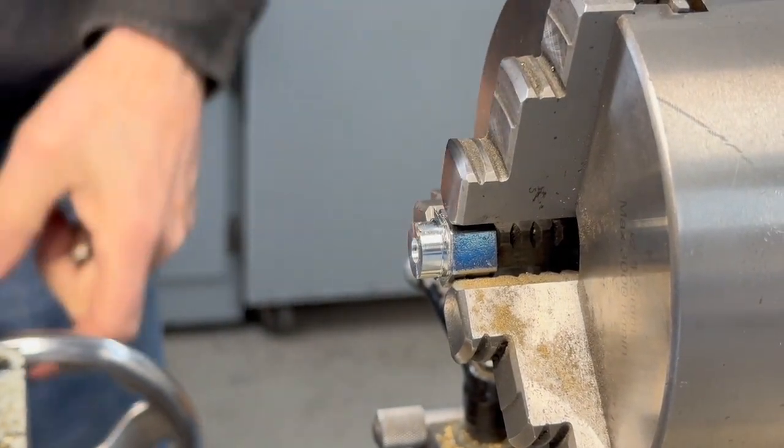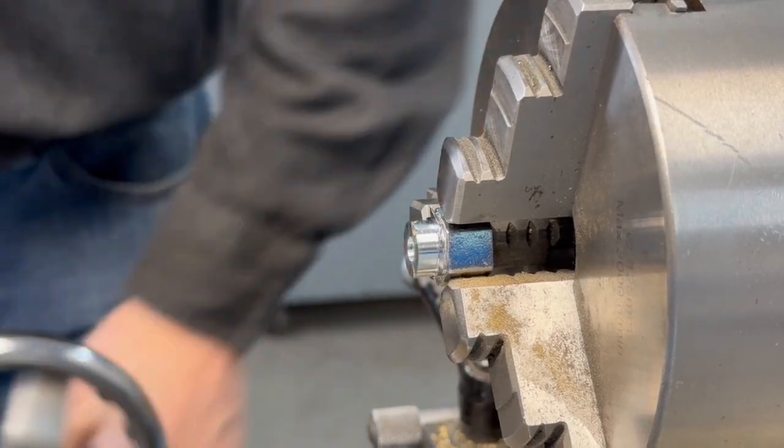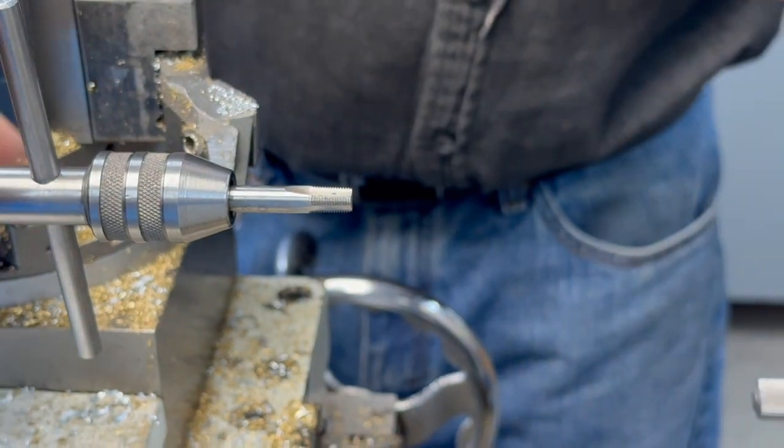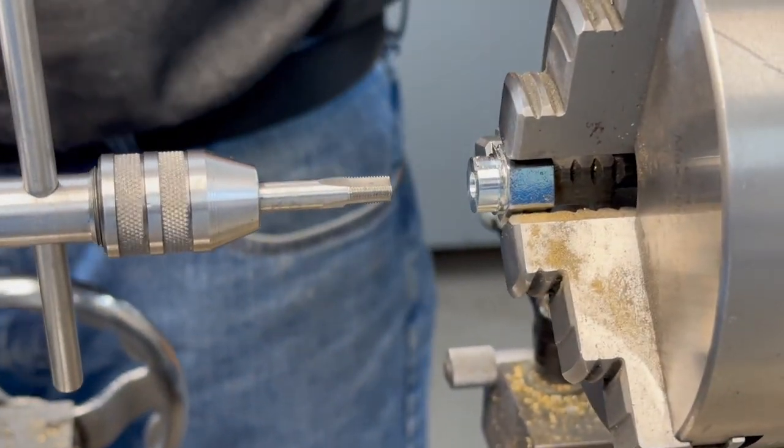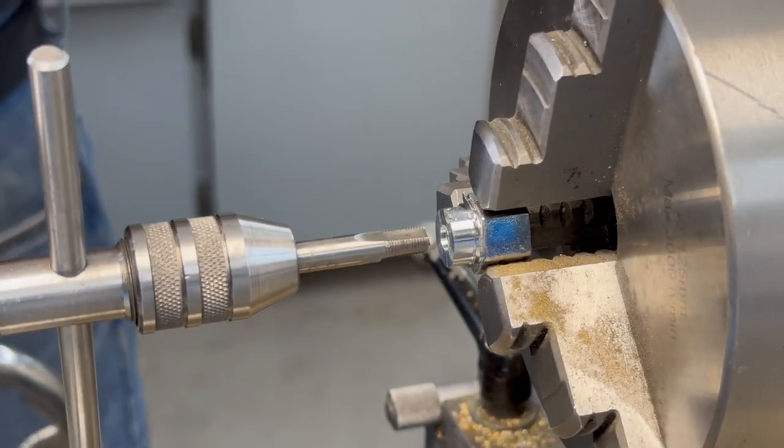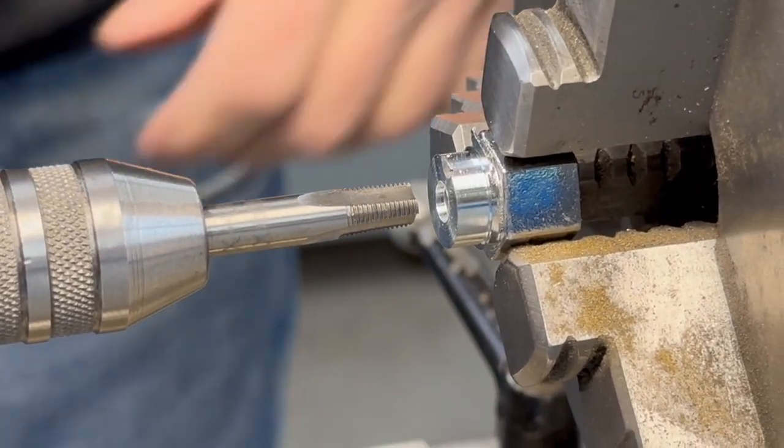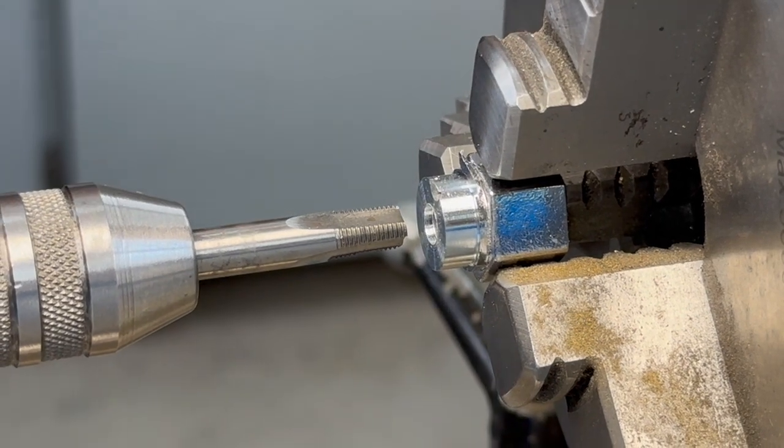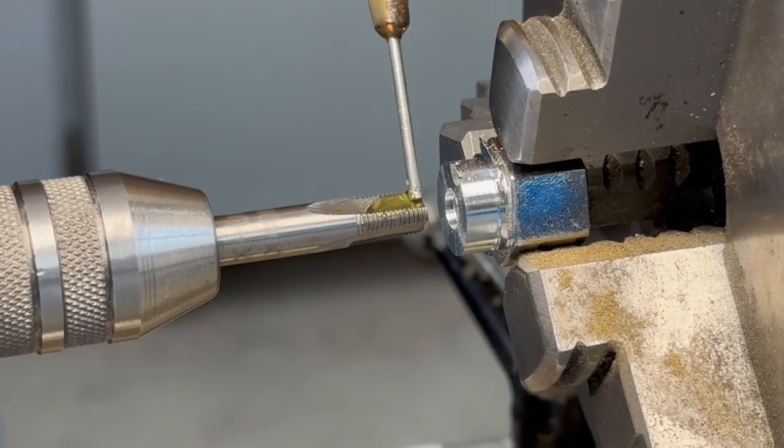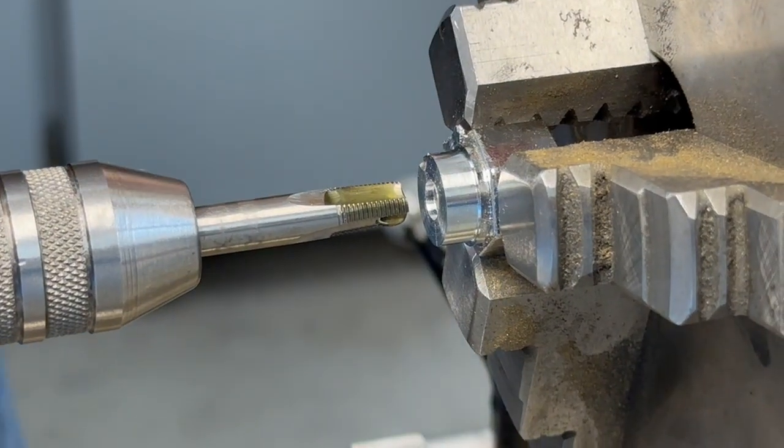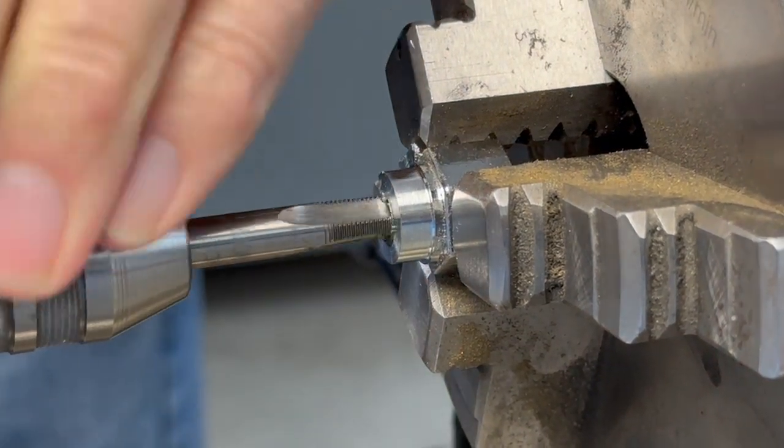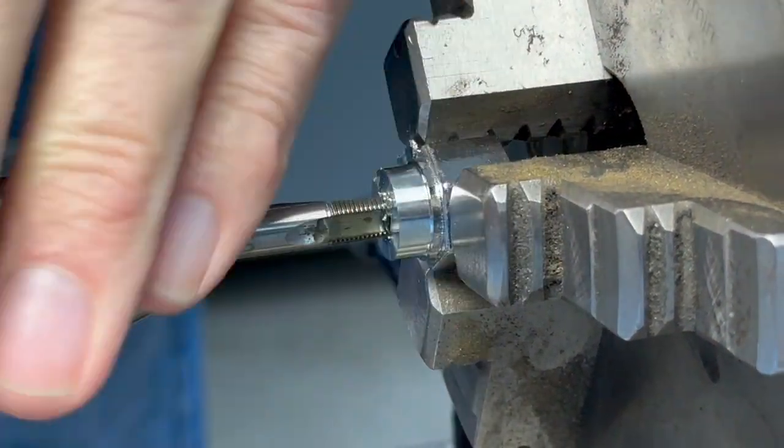I'm going to try to tap that. I've got to get a tap handle here. A little cutting oil on that. You need to lock down the spindle. Good thinking. If we can get that to start in there. Yep, it's gone.